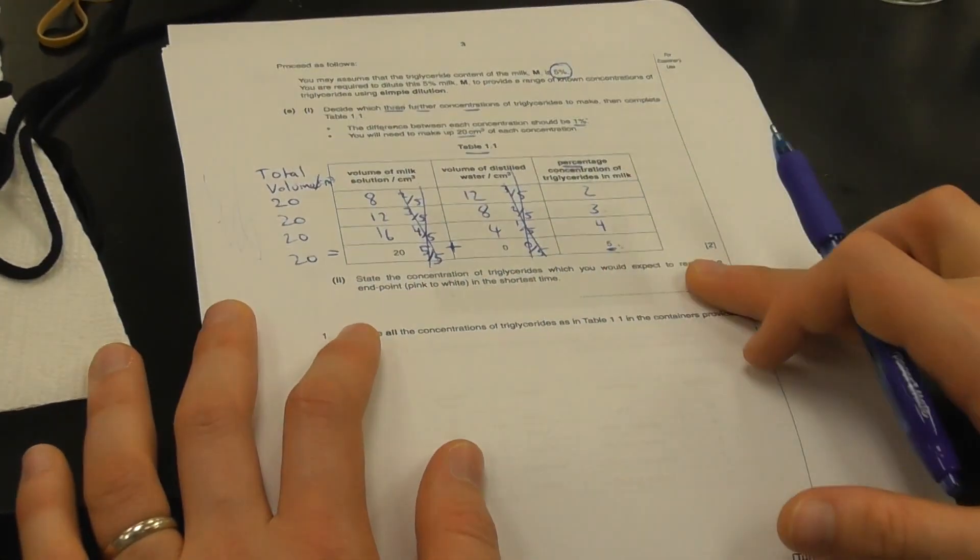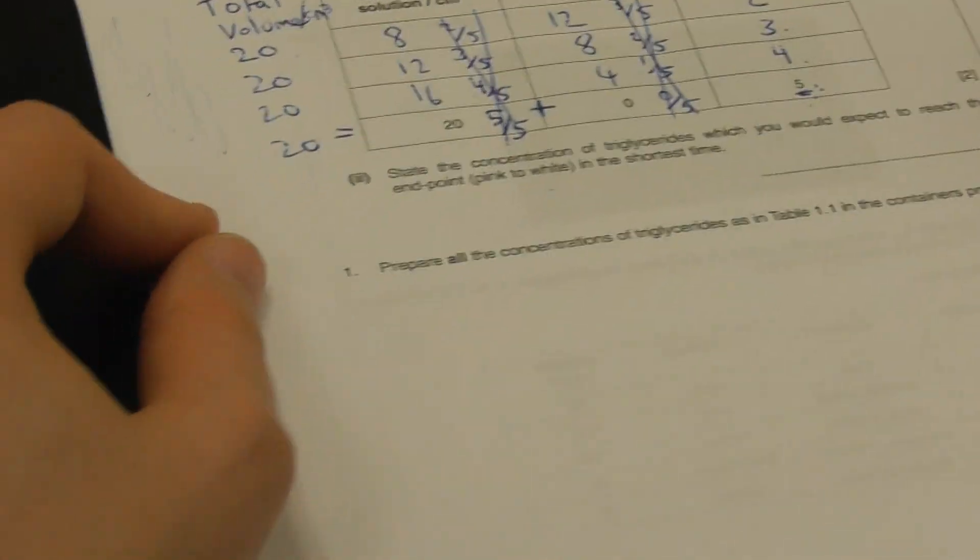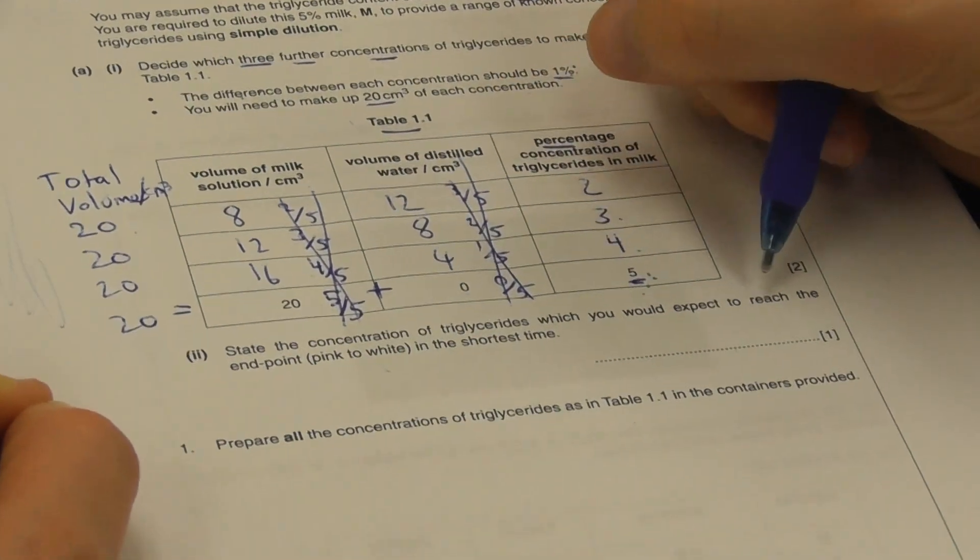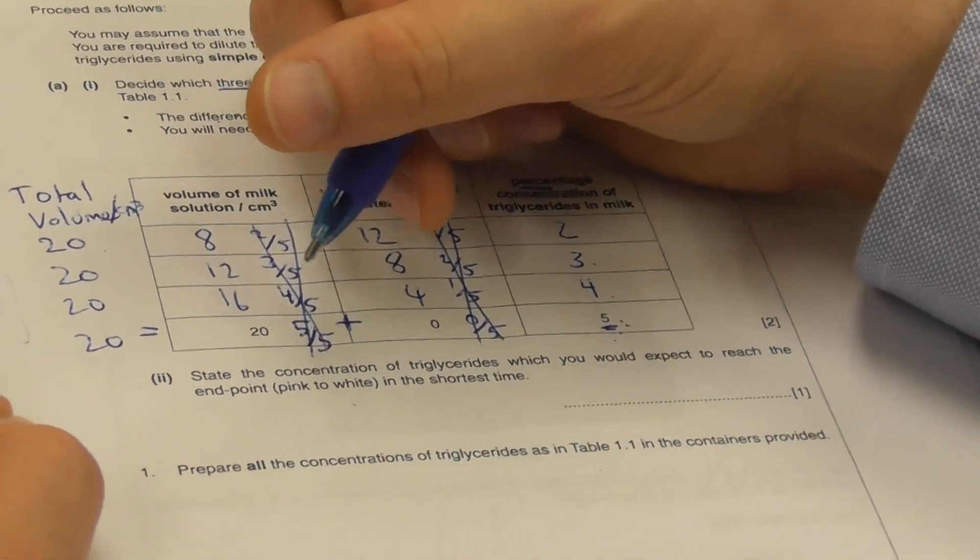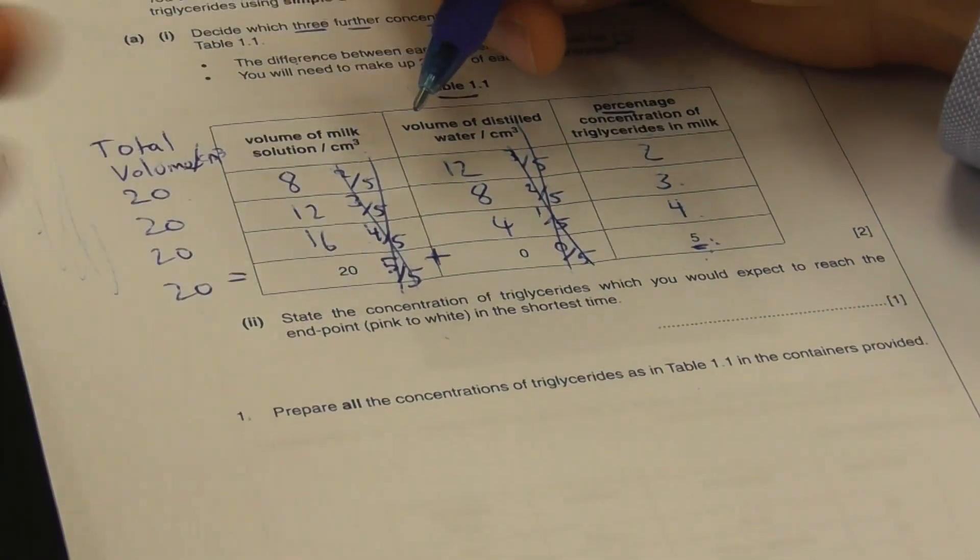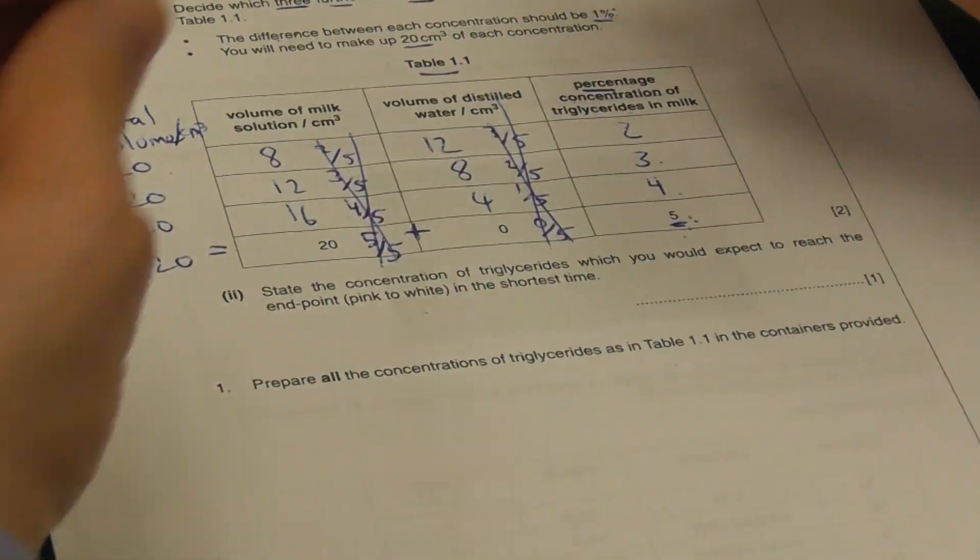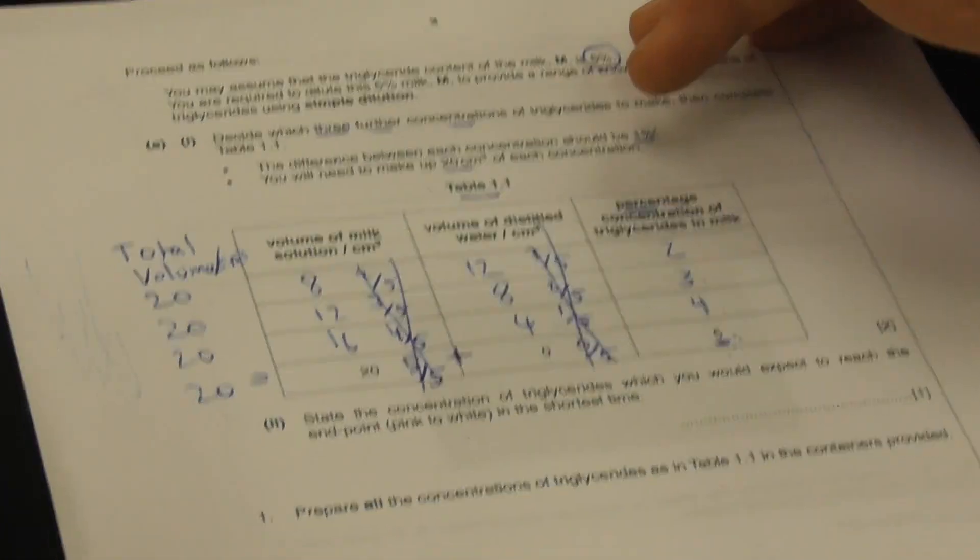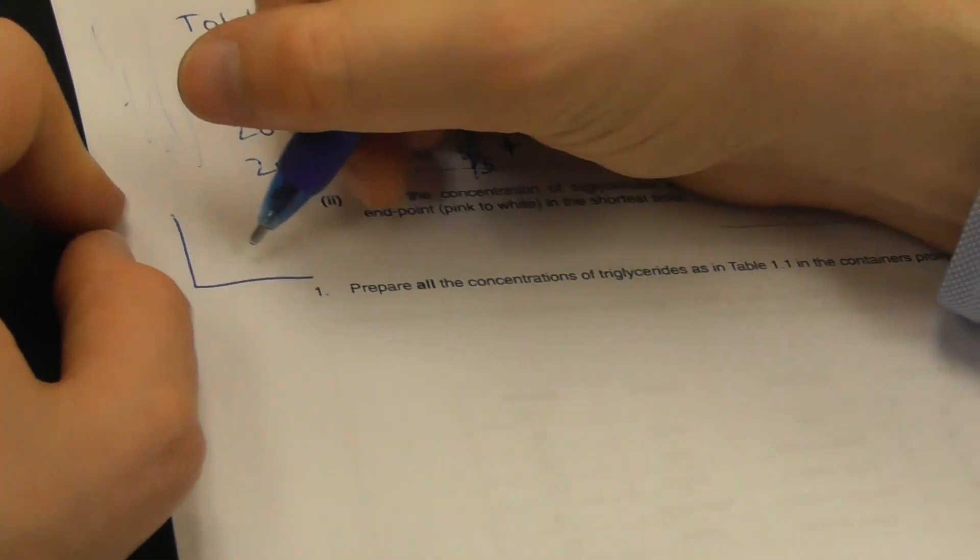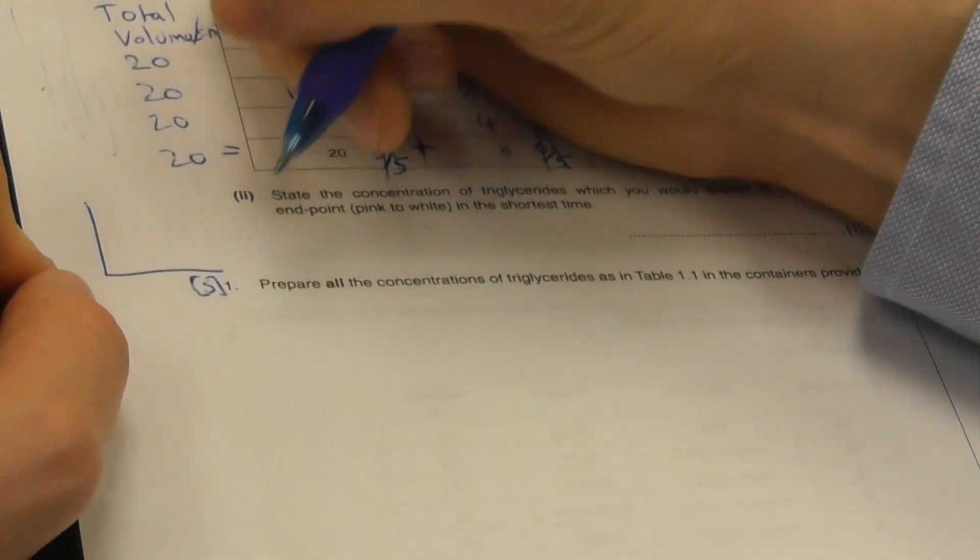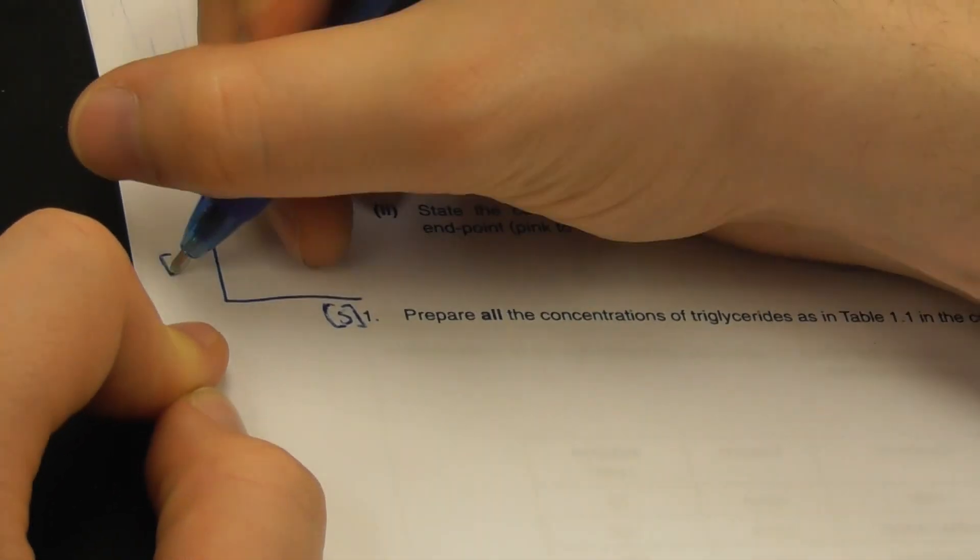State the concentration of triglycerides which you expect to reach the end point pink to white in the shortest time. We have here the triglycerides that we would expect to reach the end point pink to white in the shortest time. What is our enzyme reaction here? We have a fixed enzyme concentration E. At no point were we asked to dilute our enzyme concentration. Our enzyme concentration E was always fixed. So E is fixed. When we have fixed E and our substrate concentration is being diluted, our substrate is changing and our rate of reaction V is different.